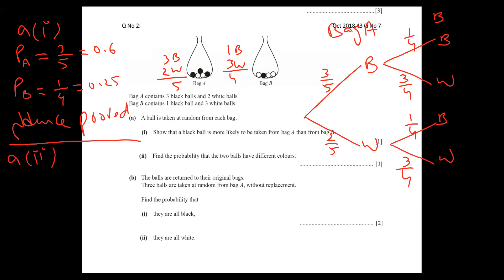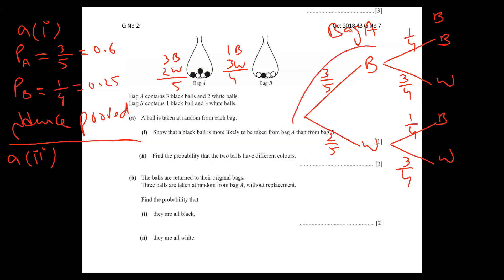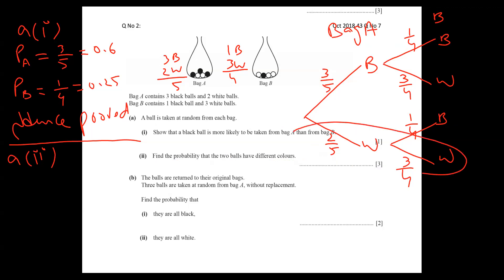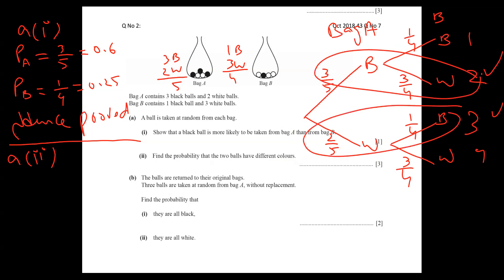Part (ii): Find the probability of two balls of different colors. Different colors means one black and one white — not black-black or white-white. Looking at the tree diagram, the relevant branches are branch two (black from A, white from B) and branch three (white from A, black from B). In a tree diagram, multiply along branches and add between branches.